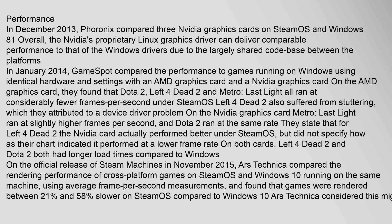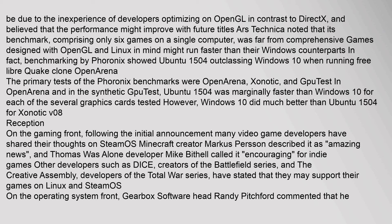In November 2015, Ars Technica compared the rendering performance of cross-platform games on SteamOS and Windows 10 running on the same machine using average frames per second measurements, and found that games were rendered between 21% and 58% slower on SteamOS compared to Windows 10. Ars Technica considered this might be due to the inexperience of developers optimizing on OpenGL in contrast to DirectX, and believed that the performance might improve with future titles. Ars Technica noted that its benchmark comprised only six games on a single computer and was far from comprehensive.